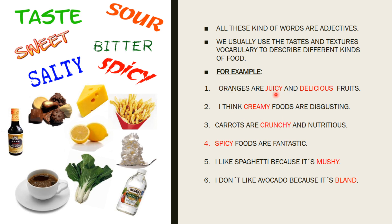Repeat after me. Juicy. Delicious. Oranges are juicy and delicious fruits. Creamy. I think creamy foods are disgusting. Crunchy. Carrots are crunchy and nutritious. Spicy. Spicy foods are fantastic. Mushy. I like spaghetti because it's mushy. Bland. I don't like avocado because it's bland.